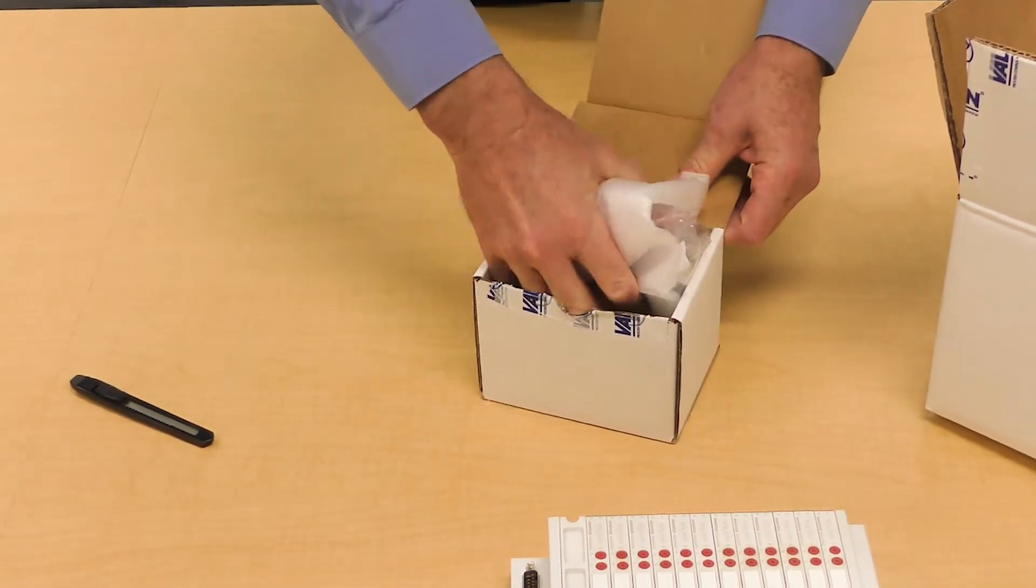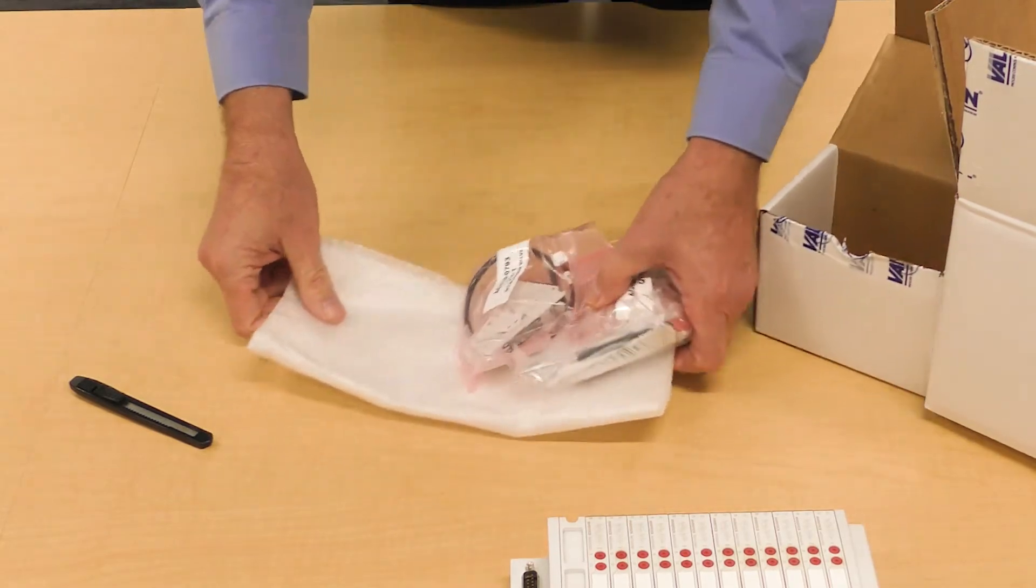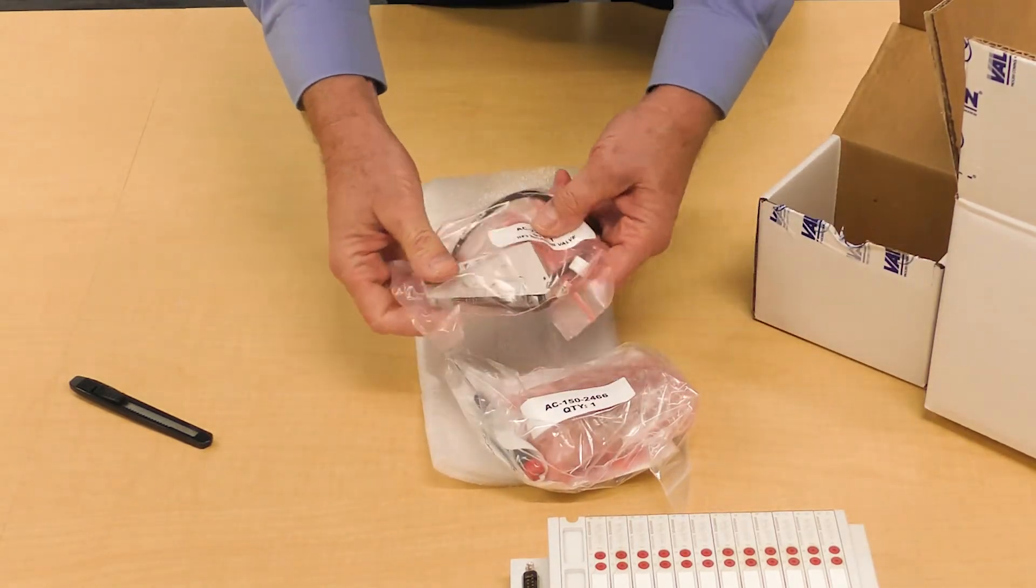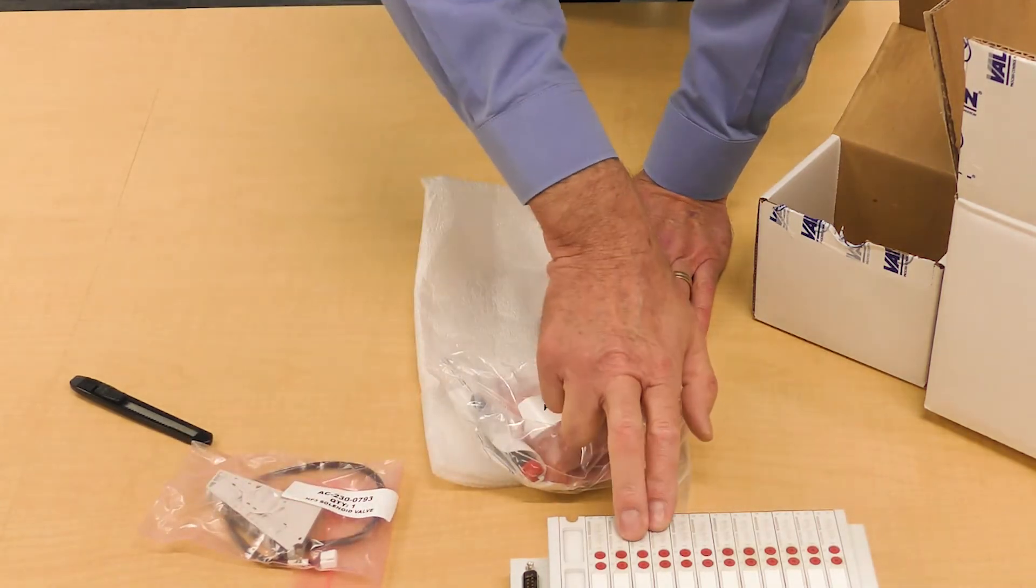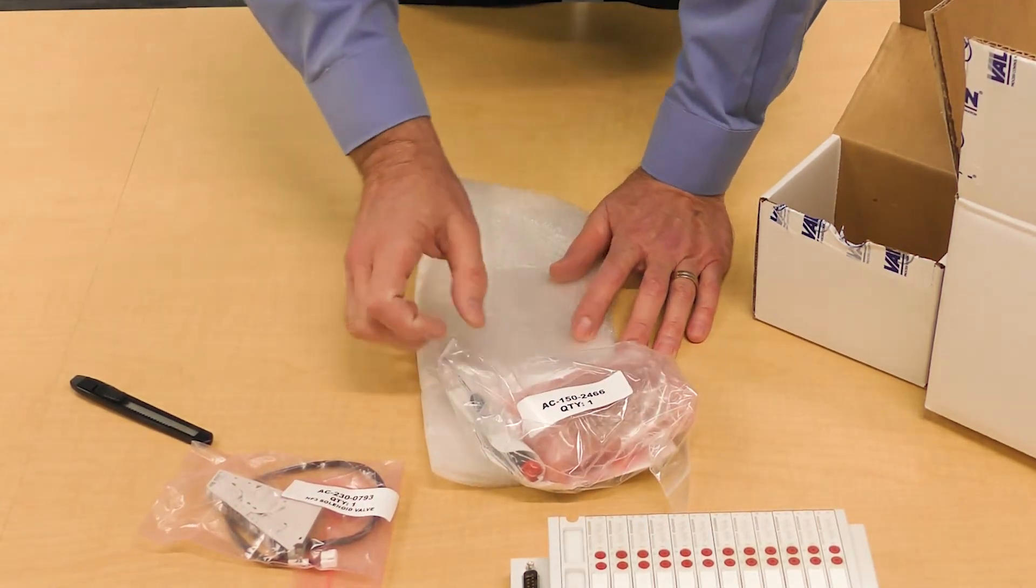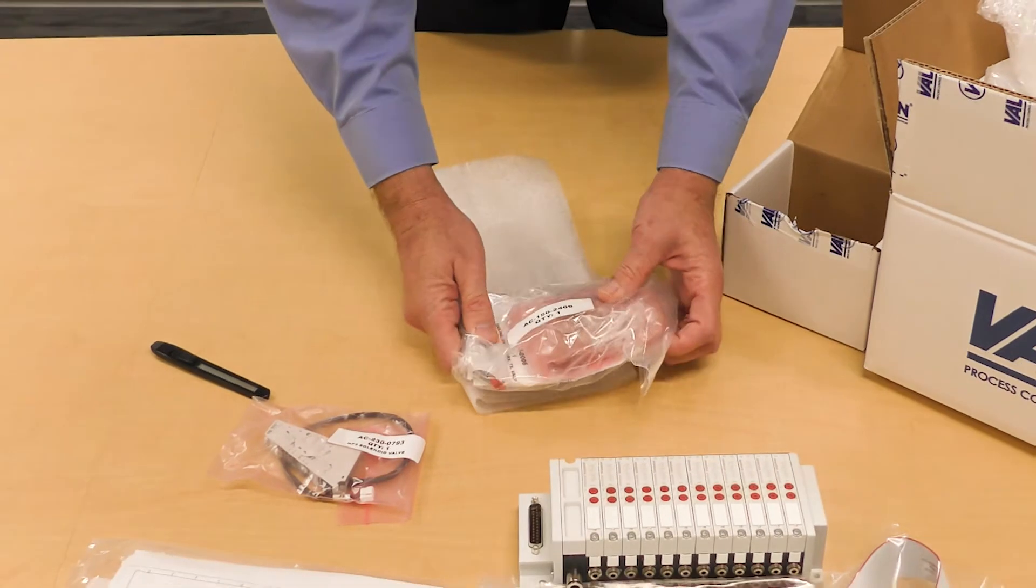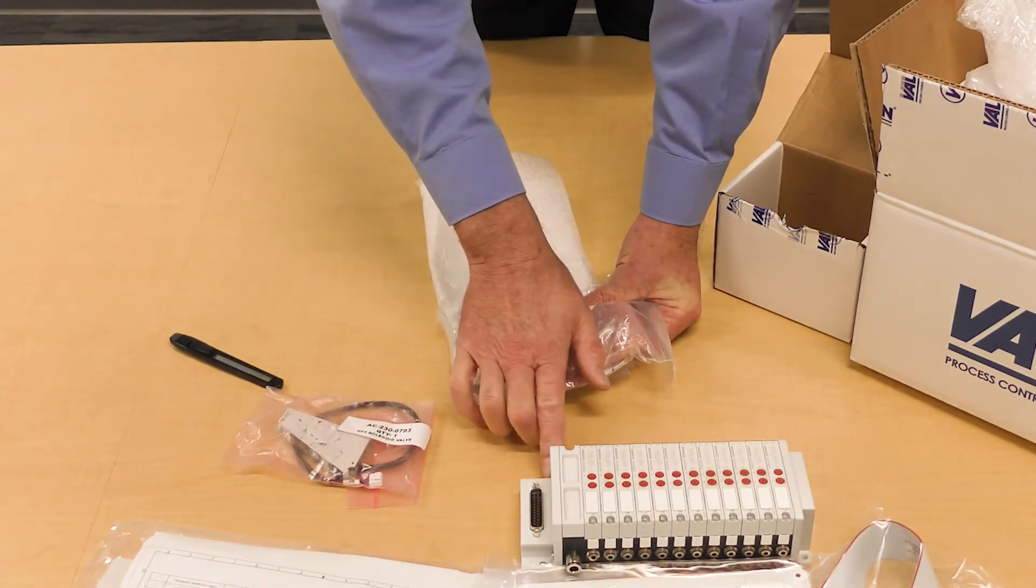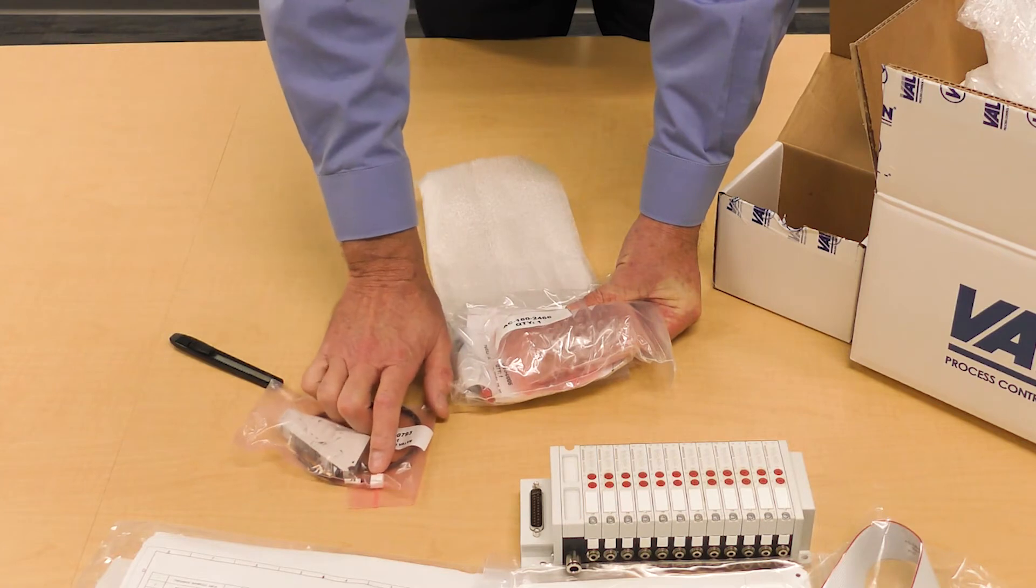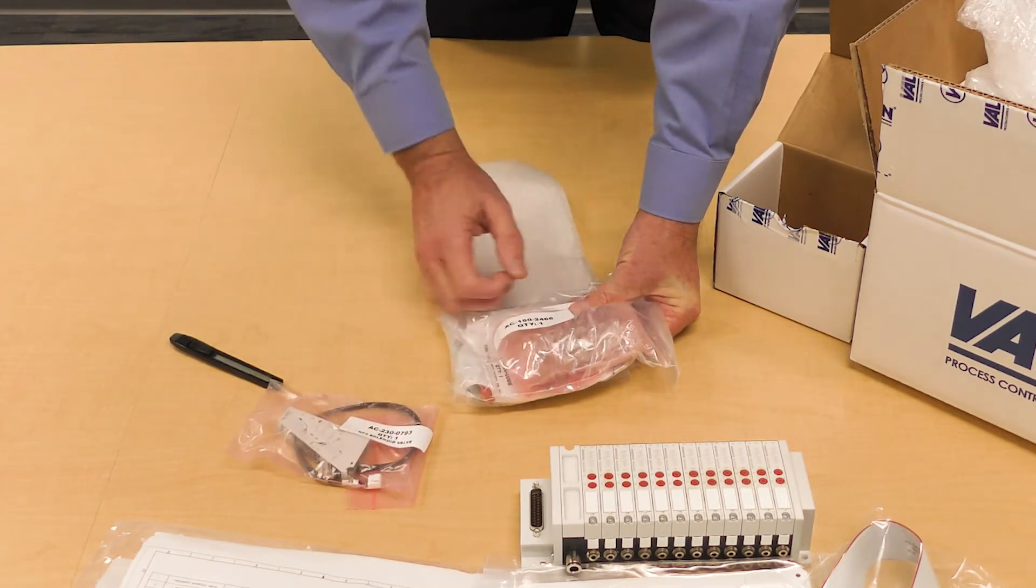We'll go ahead and open this. Again, very nice packaging. So this kit contains a valve that we'll replace on the manifold that is removed from the internal bus so we can power it as necessary through the NF3 interlock system.